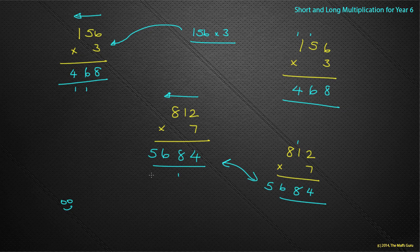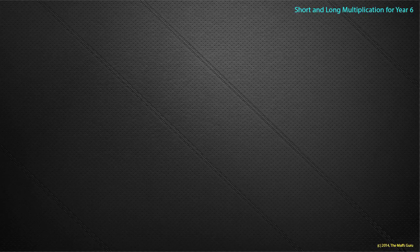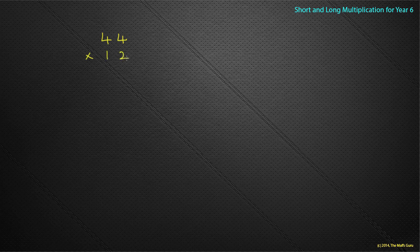The same principle applies with long multiplication. This time, rather than having just a unit, we have a tens and a unit as the multiplier. Let's look at an example: 44 times 12. We always start with the 2 and work our way along the top number — almost ignoring the 1 for now. So 2 times 4 is 8, and 2 times 4 is also 8. This is nice — we didn't have to carry anything.